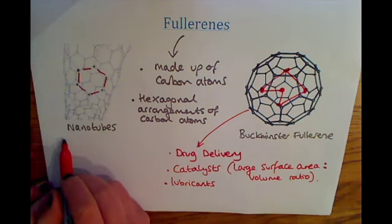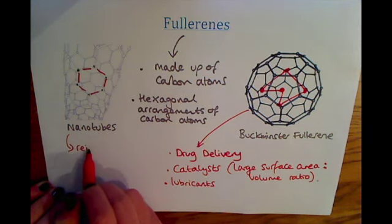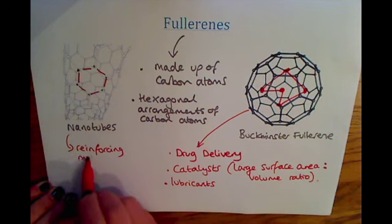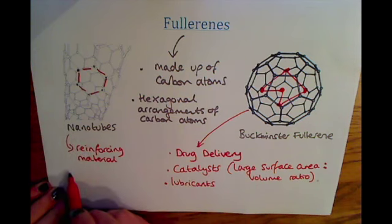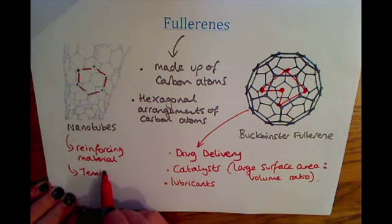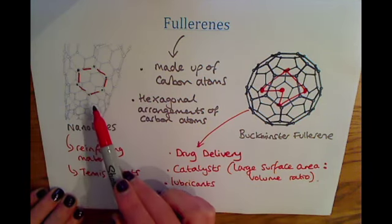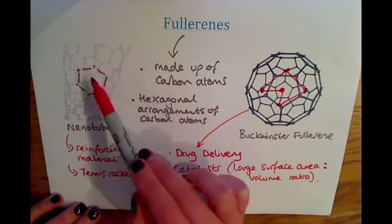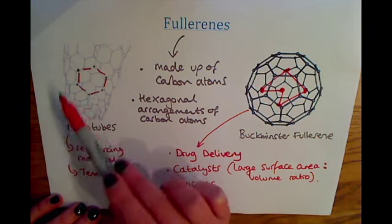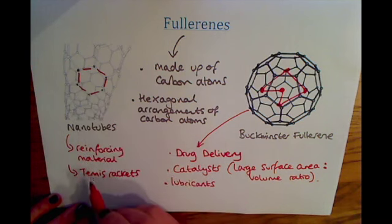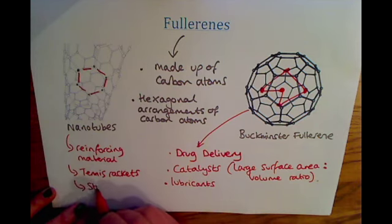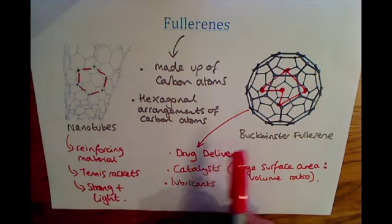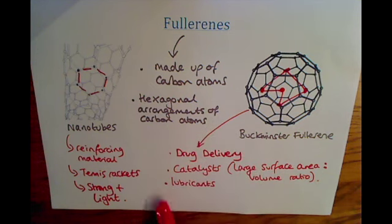Nanotubes are also useful as reinforcing materials. This nanotube technology has been used in things such as tennis rackets because it's very strong but lightweight. The carbon atoms bond hexagonally with covalent bonds, forming a very strong structure. Because of the large surface area to volume ratio, it's also very light, so it's useful to reinforce materials to make them strong while keeping them light. Those are the fullerenes — made up of carbon, with large surface area to volume ratios, and useful for a number of new technologies.